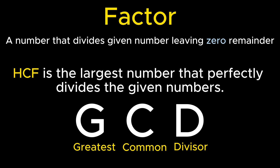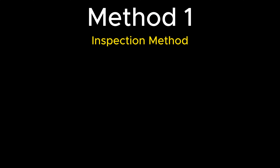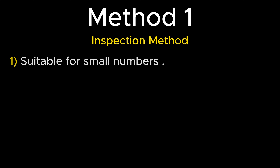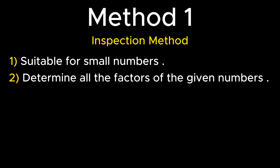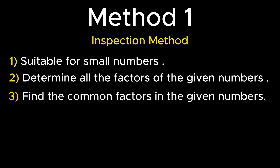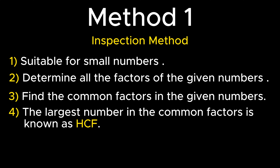After understanding the meaning of HCF or GCD, let's understand the methods to find the HCF of two numbers. The first method is the inspection method, which is suitable for small numbers, that is, one or two digit numbers. As per this method, all the factors are determined and common factors are analyzed. Since HCF refers to the highest common factor, the largest among the common factors is the HCF of the given numbers.